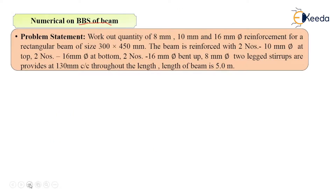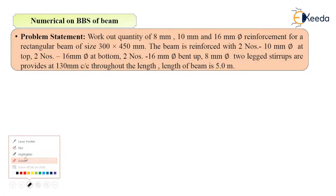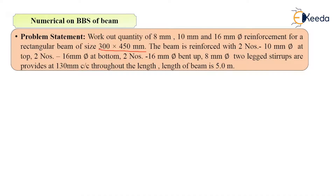Let's see the problem statement. It says: work out the quantity of 8 mm, 10 mm, and 16 mm diameter reinforcement for a rectangular beam of 300 mm by 450 mm. Three types of bars are used in the beam: 8 mm, 10 mm, and 16 mm diameter bars. The beam is reinforced with two bars of 10 mm at the top — those are the top anchor bars.